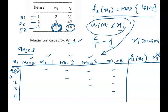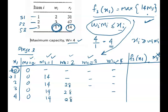Now we substitute the value of M3 into our function. When M3 equals 0: 14 times 0 is 0, so all values in that column are 0. When M3 equals 1: 14 times 1 is 14, so all valid values in that column are 14. When M3 equals 2: 14 times 2 is 28, so all valid values in that column are 28. When M3 equals 3: 14 times 3 is 42, so the value is 42. When M3 equals 4: 14 times 4 is 56, so the value is 56.